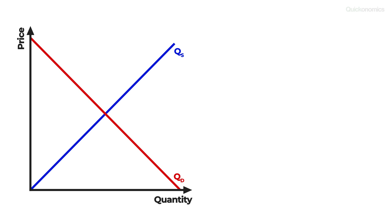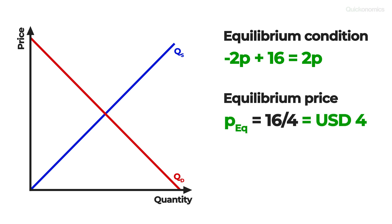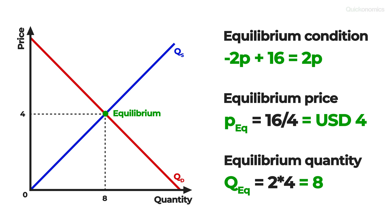In our example, the equilibrium condition can be written as minus 2 times price plus 16 equals 2 times price. If we solve this for p, we find that the equilibrium price is $4. That means at a price of $4, the market is in equilibrium and there is no pressure on the price to move up or down. If we plug this number back into the supply function, we find that the equilibrium quantity is 8 candy bars — meaning 8 candy bars can be sold at a price of $4 each when the market is in equilibrium.